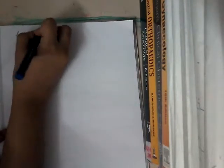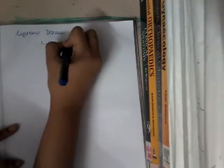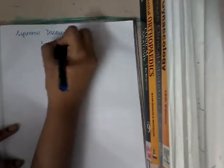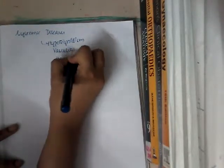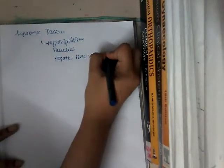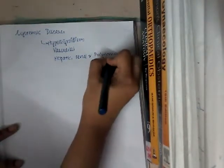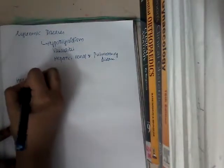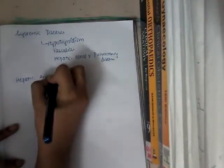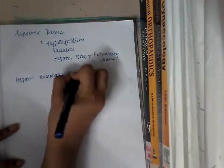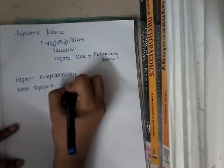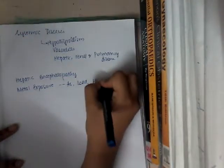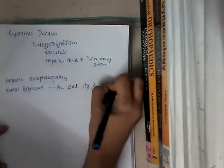Even in systemic diseases like hypothyroidism, vasculitis, hepatic, renal, and pulmonary diseases, there are chances of dementia. Whenever there is hepatic encephalopathy, or metal exposure like arsenic, lead, mercury, and aluminium poisoning, all these can also lead to dementia.